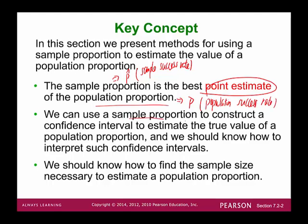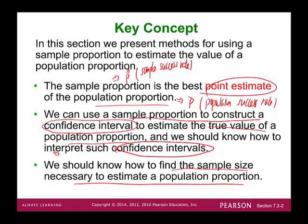We can use a sample proportion to construct the confidence interval. This is another major topic in this chapter — constructing a confidence interval to estimate the true value of the population proportion. We also learn how to interpret such confidence intervals, and we'll use a formula to find the sample size necessary to estimate the population proportion.